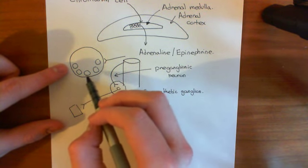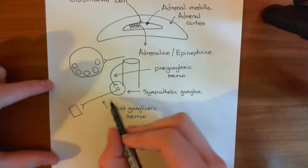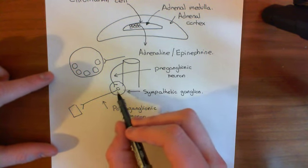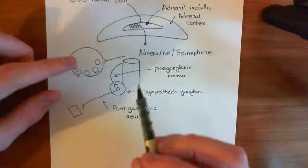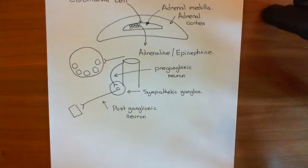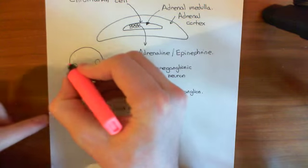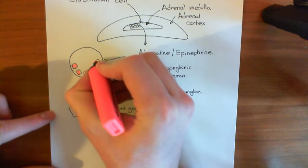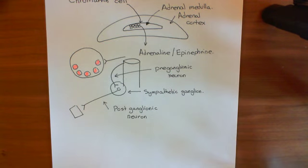The chromaffin cell is releasing adrenaline/epinephrine into the bloodstream. Postganglionic neurons of the sympathetic nervous system nearly always secrete noradrenaline/norepinephrine, so there is a nice correspondence between postganglionic neurons and adrenal chromaffin cells. Adrenal chromaffin cells then have these synaptic vesicles filled with adrenaline/epinephrine, which are ready to be released. So we're going to discuss how we can do total internal reflection fluorescence microscopy on these adrenal chromaffin cells.